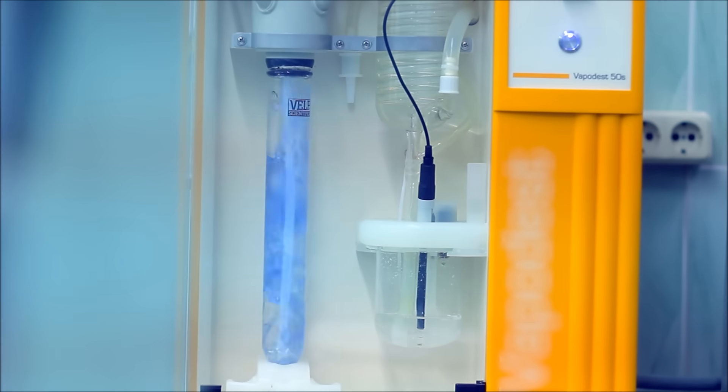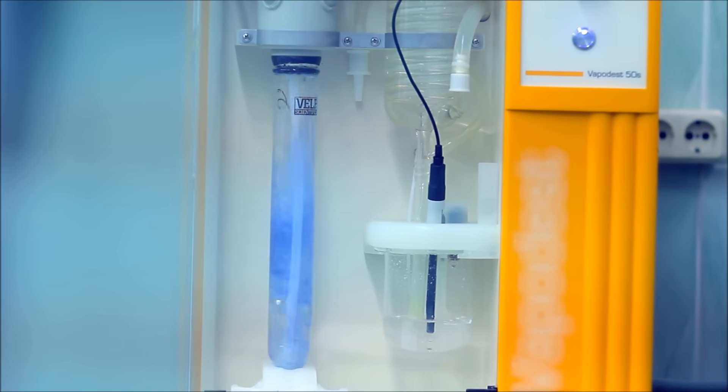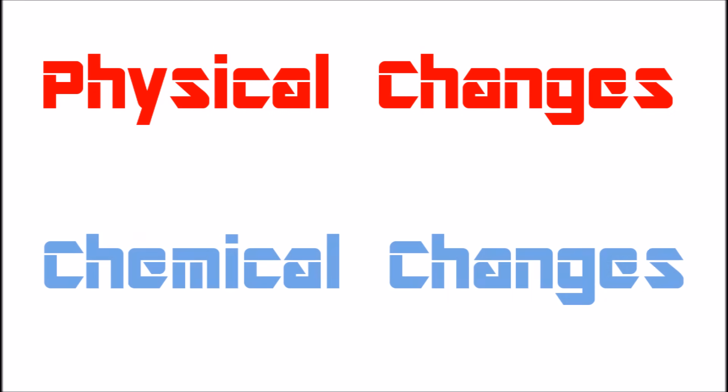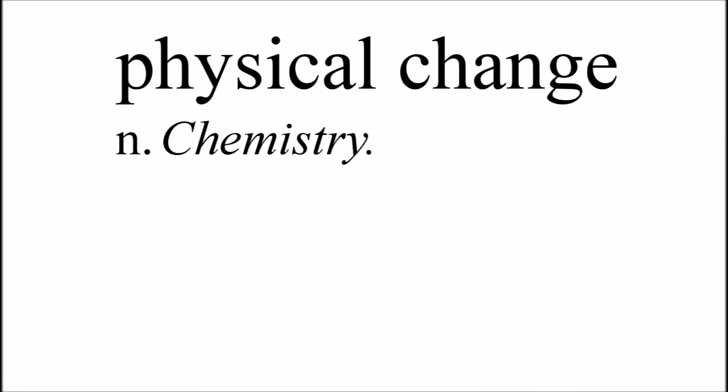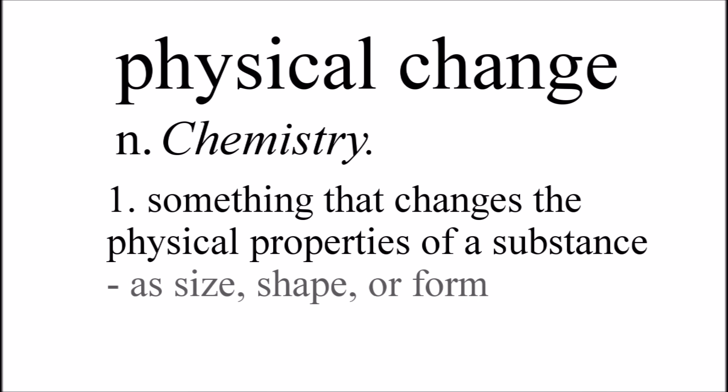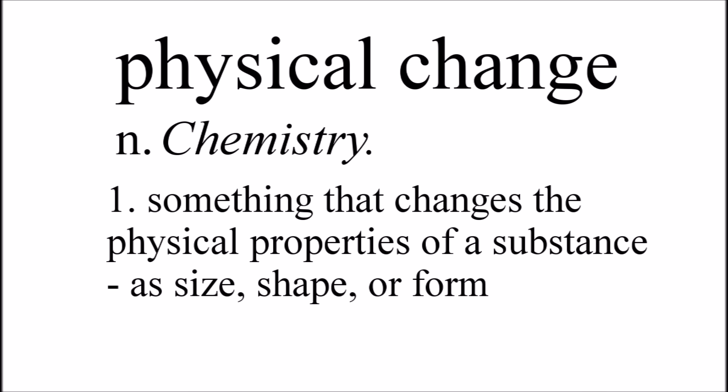In chemistry, most changes are divided into two categories: physical changes and chemical changes. A physical change is something that changes the physical properties of an object or substance, like size, shape, or form.